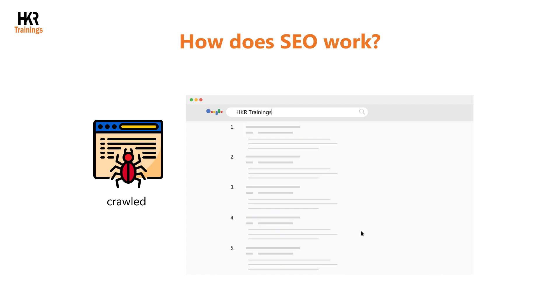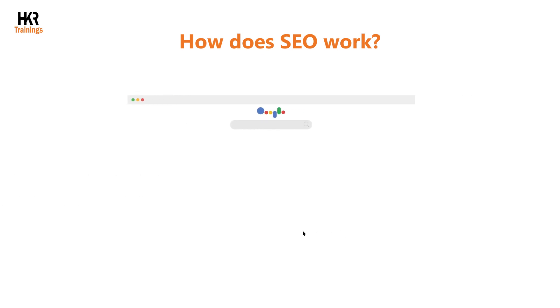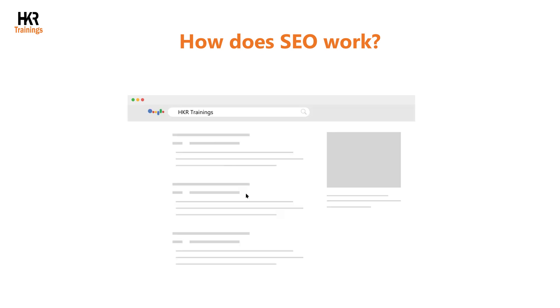The search engine ranks the pages in order of relevance when the user enters a query into the search bar — whether it be for routine searches or to evaluate the organic presence of your business on the search results page — and the user is then served with these links. Now let's go through the types of SEO.